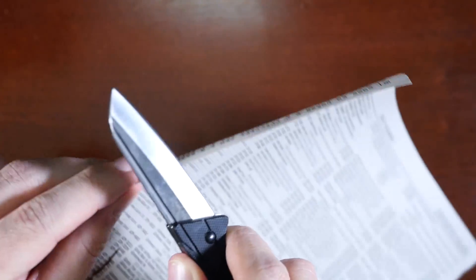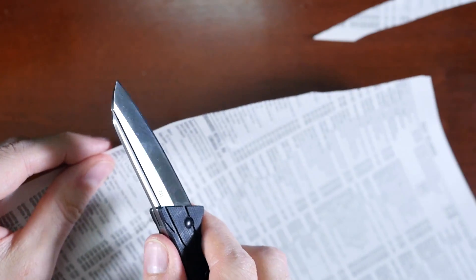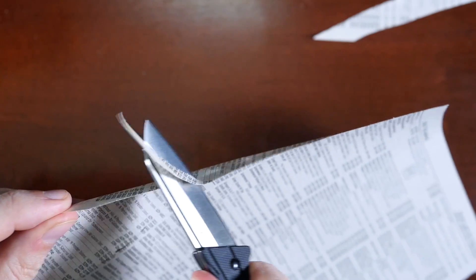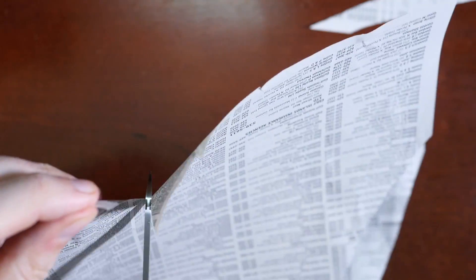I've already shown you the hair shaving, but let's also do the customary phone book paper slice, which is smooth. There's no slicing action needed here, so I just pull it straight through, and it makes a really nice, clean cut. That's what I like to see. This is a really good grind. Excellent.